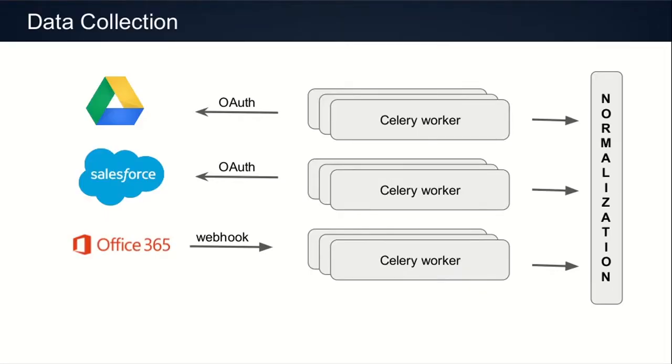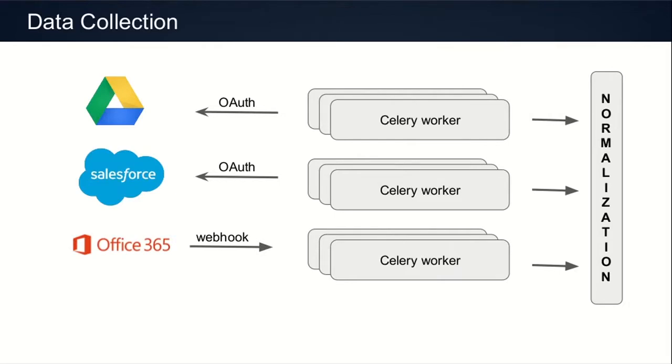The first part is data collection. Here we're leveraging the APIs of Google Drive, Salesforce, and Office 365. We're supporting a lot of different platforms, and we're either using OAuth or getting events directly through webhooks. We're using Celery, and I'll give you some of the issues we encountered using Celery at scale, because we're using Celery and RabbitMQ in combination. We use Celery workers to collect the data, then send them through Rabbit to a normalization step, since we have multiple sources but want only one source of truth.